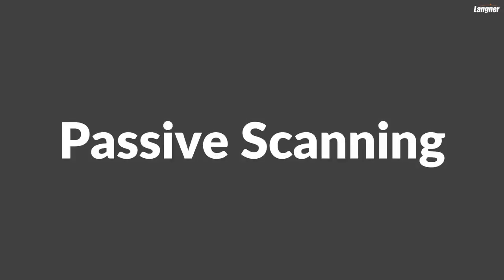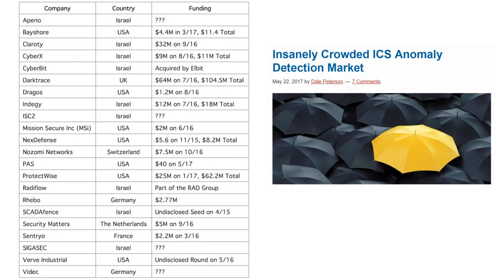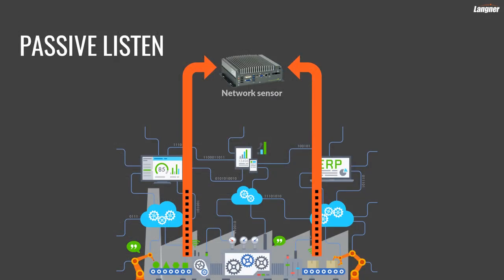The first generation of OT asset discovery products try to crack the nut by what is usually called passive scanning. In this category, we find vendors such as Clarity, Nozomi, Security Matters and about 25 others. The term passive scanning is a bit technically incorrect as actually no network scanning takes place. Instead, a network appliance sniffs all network traffic and parses it for data that can be used to identify endpoints and traffic patterns.